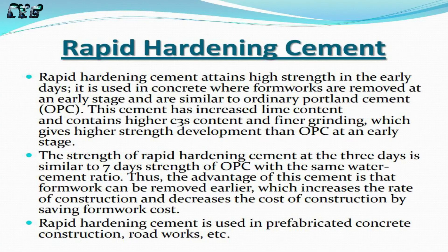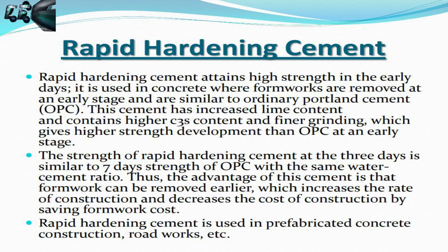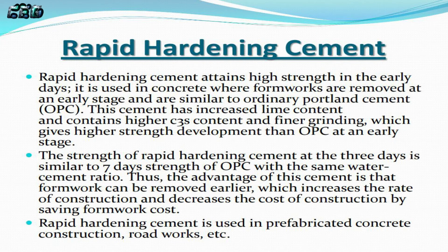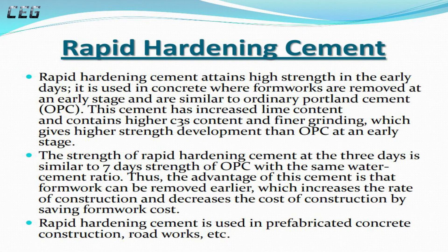Rapid Hardening Cement attains high strength in the early days. It is used in concrete where formworks are removed at an early stage, and is similar to Ordinary Portland Cement (OPC). This cement has increased lime content and higher C3S content and finer grinding, which gives higher strength development than OPC at an early stage.